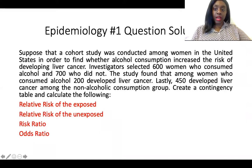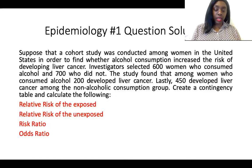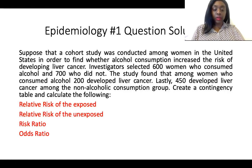For the first question, I'll read out loud. Suppose that a cohort study was conducted among women in the United States in order to find whether alcohol consumption increased the risk of developing liver cancer. Investigators selected 600 women who consume alcohol and 700 who did not. Among women who consume alcohol, 200 developed liver cancer. Lastly, 450 developed liver cancer among the non-alcohol consumption group. Create a contingency table and calculate the relative risk of the exposed, relative risk of the unexposed, risk ratio, and odds ratio.